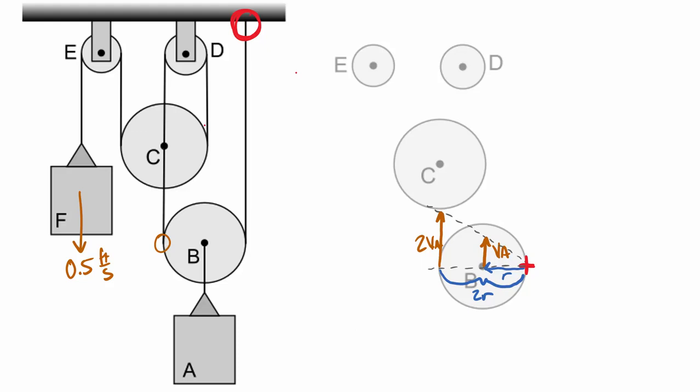Okay, so 2VA is the velocity at this point here on the left side of that pulley. That velocity is then transferred up to the center of pulley C. So the center of pulley C is moving up to 2VA. Now, these top two pulleys here, E and D, it turns out that they're both fixed axes pulleys. That means that the middle of the pulley is not moving. Therefore, if the middle of the pulley is not moving, it is an ICZV.